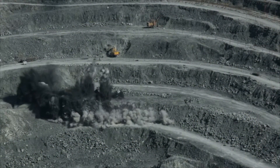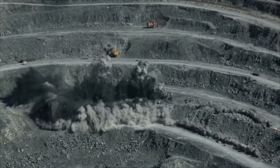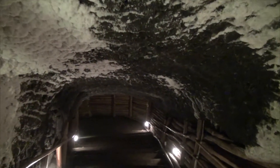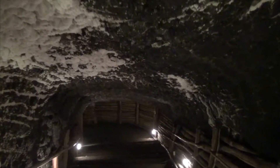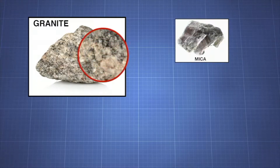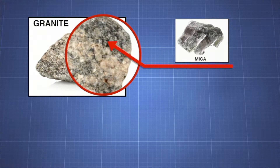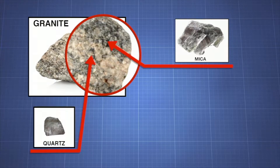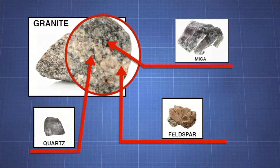Minerals are found on Earth's surface and underground, too. Minerals are the building blocks of rocks. For example, this is a chunk of igneous rock called granite. When you look closely, you'll see black grains of the mineral mica. The grains of gray are mineral quartz, while the white grains are feldspar.